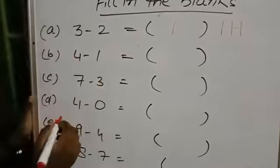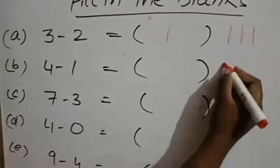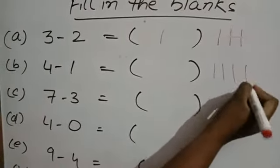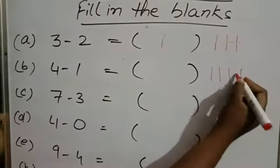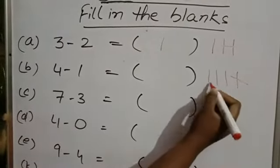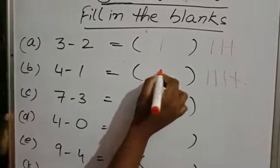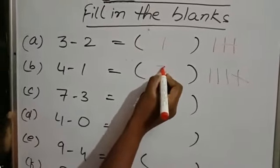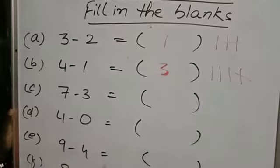Second one: 4 minus 1. First, you draw 4 lines and cut 1 line. How many lines are left? 1, 2, 3. That means you are getting 3.